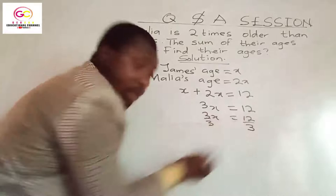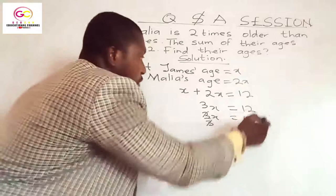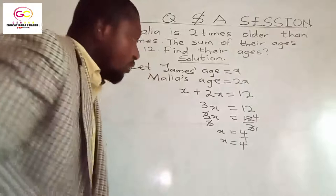3 will cancel on the left side. 3 goes into 12 four times — 3, 6, 9, 12 — so 4 times. Now X will be equal to 4 over 1. And any number over 1 in math is the same as that number. So X is equal to 4.